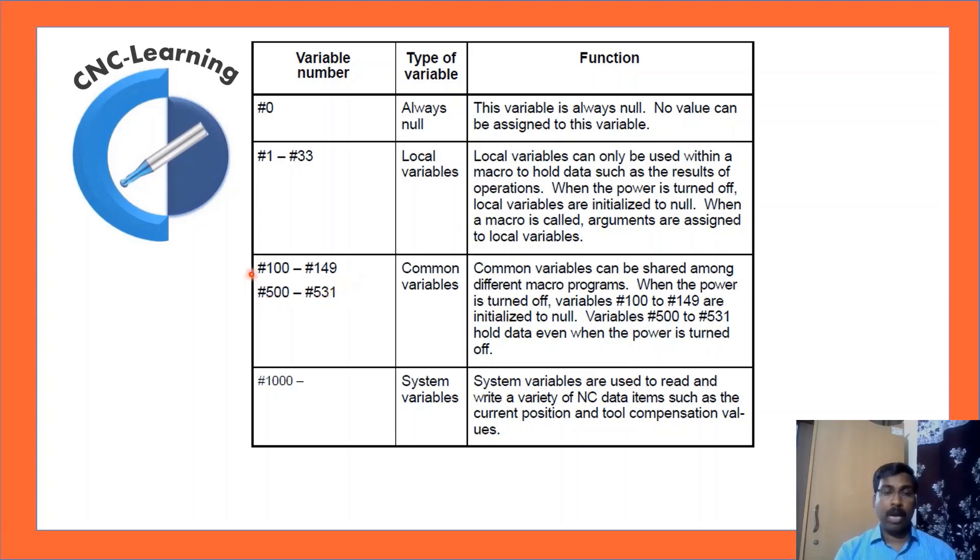Now, #100 to #149. That is common variables. So, we will be using these common variables most of the times. These common variables can be shared among different macro programs. When the power is turned off, these #100 to #149 are also initialized to null. Whereas, variables #500 to #531. The data is even kept in memory even if you switch off the power.